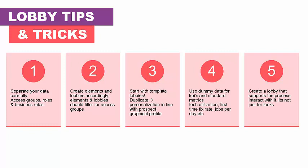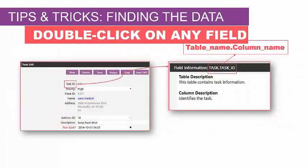Create a lobby that supports the process and interacts with it — lobbies are more than just for looks; they need to add value to your user's day-to-day life. When you go to build lobbies, if you don't know what the name of a field is, you can double-click on any field in the application and it will tell you the table name and column name. By double-clicking on Task ID, I get the field information showing it comes from the table 'task' and the field is 'task_id'. This is true even if you've used localization to privately label the messages.